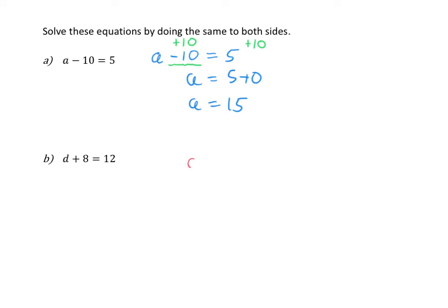In my second example, d plus 8 is equal to 12. I want to find out the value for d by getting it by itself on the left-hand side. To do that, I need to remove the plus 8, and I do that by doing the opposite of plus 8, which is to subtract 8.